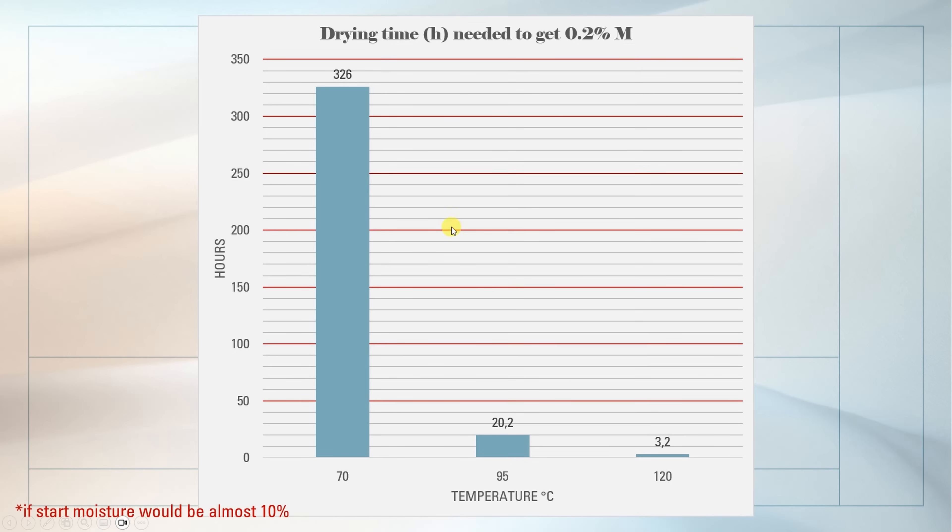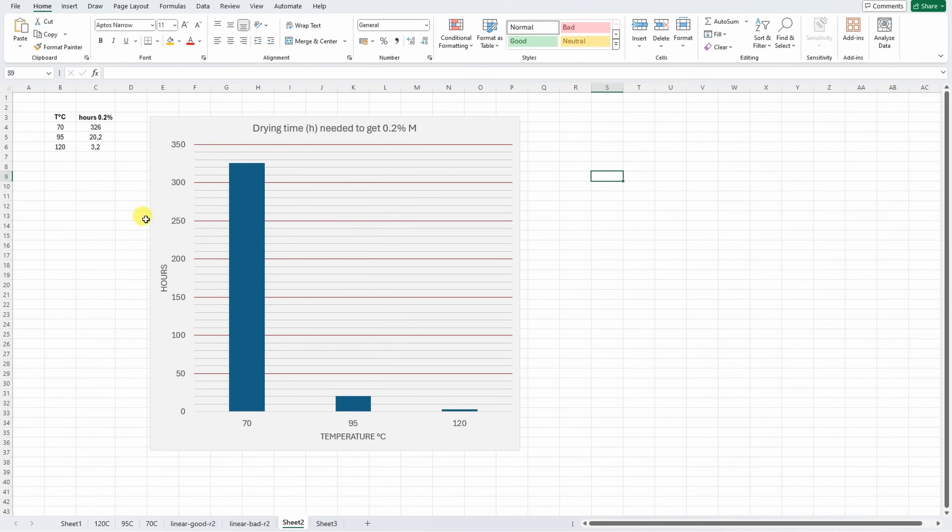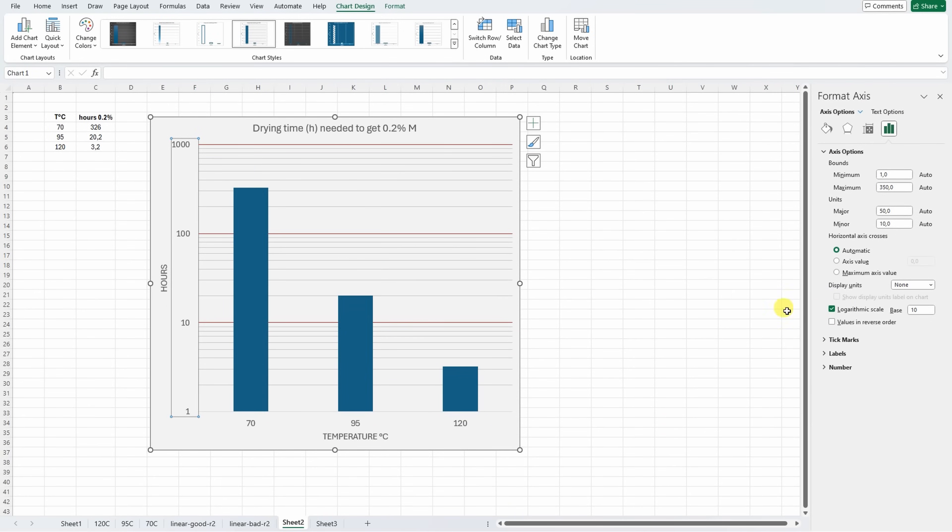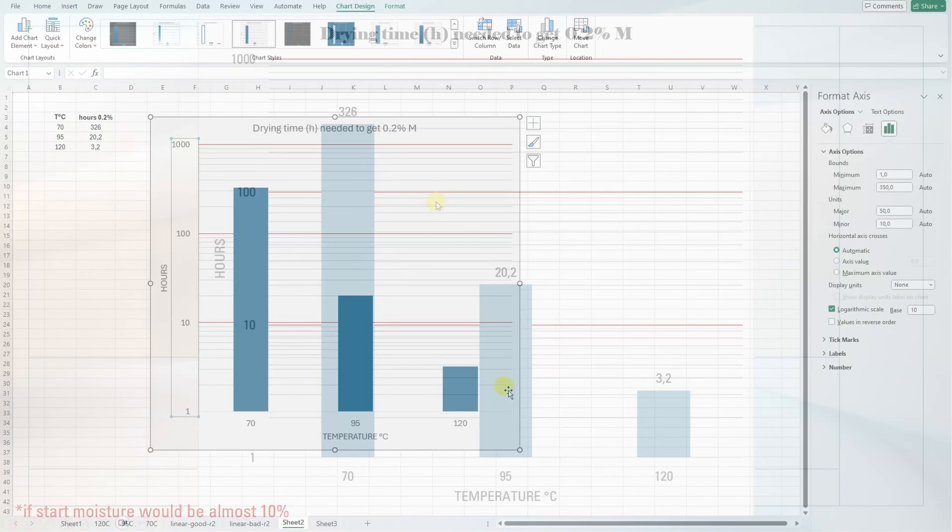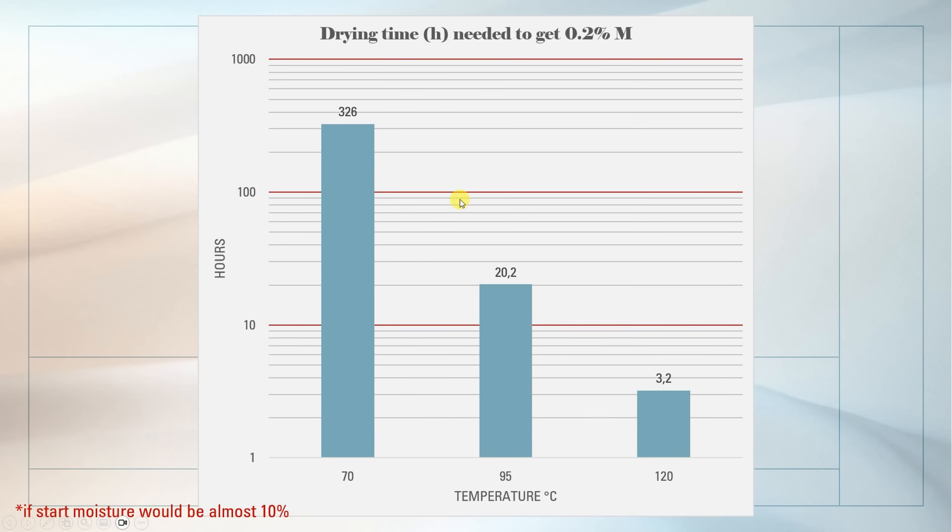Actually, here it is hard to present some correlation with this. But if we change this scale to the logarithmic scale, we can do this in Excel, very simple. We will get something like this. And now we can place almost a linear line here. I don't even have to bombard you with some new functions. For example, if you are curious about 85 degrees Celsius, to get 0.2% of the moisture, starting from almost 10, we need approximately 50 hours.